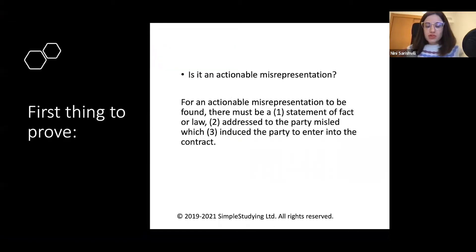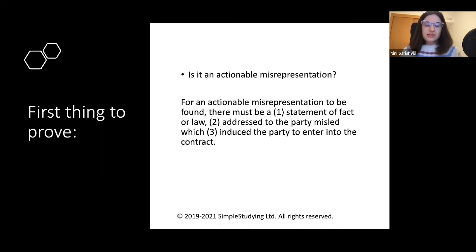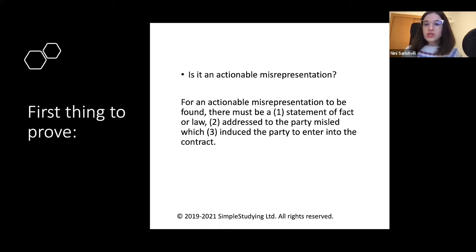There are three steps to be proven. Firstly, what you need to prove is that the statement at hand — the statement given in a problem question — is an actionable misrepresentation. For you to prove that, there are three requirements: the statement must be of fact or law, it has to be addressed to the party misled, and it has to induce the contract.